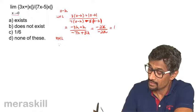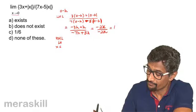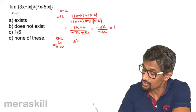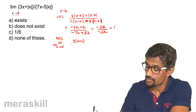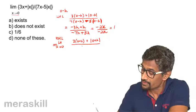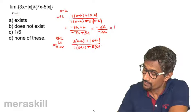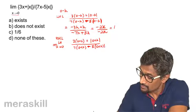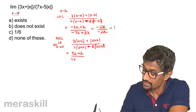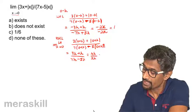For the right-hand limit, we take the limit as x tends to 0 from 0 plus h. It becomes 3 times (0 plus h) plus the absolute value of (0 plus h), divided by 7 times (0 plus h) minus 5 times the absolute value of (0 plus h). This gives 3h plus h upon 7h minus 5h, which is 4h by 2h, equal to 2.